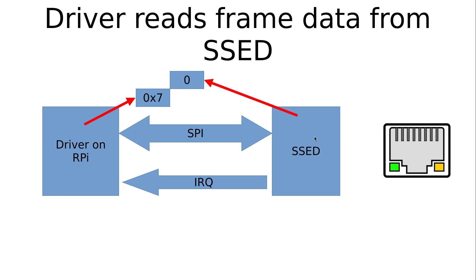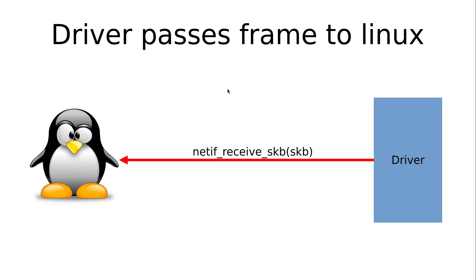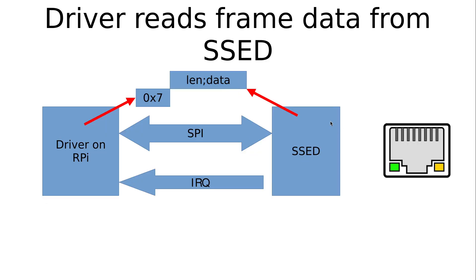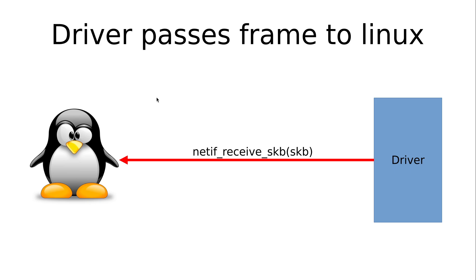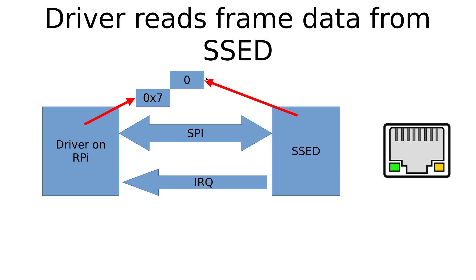If the SET device sends a non-zero length again, it means multiple frames were received and the driver can continue reading them out by issuing the receive frame command repeatedly. When all frames are read out, the SET device responds with zeros to the 0x7 get received frame command. That's how frames are received on the SET device and what interaction is needed in the driver.